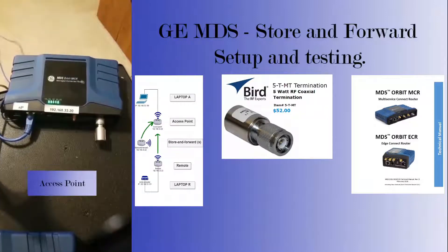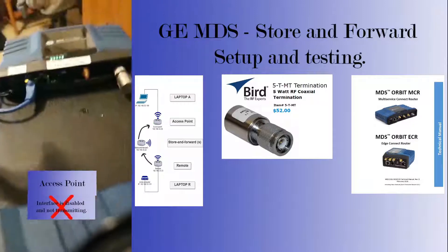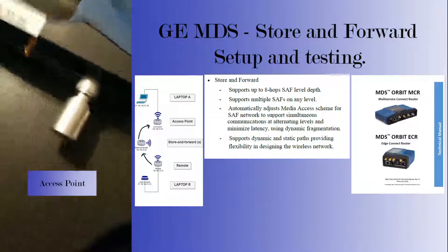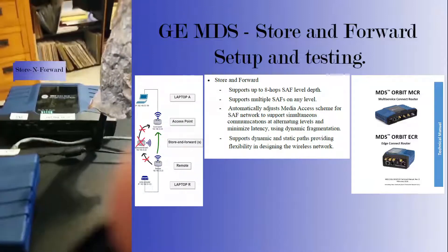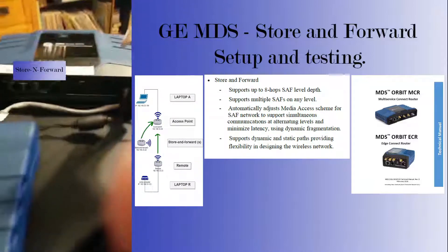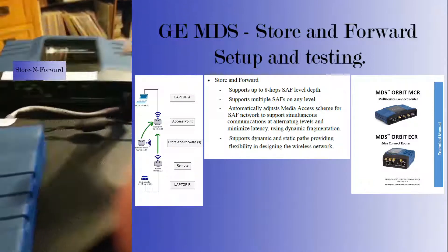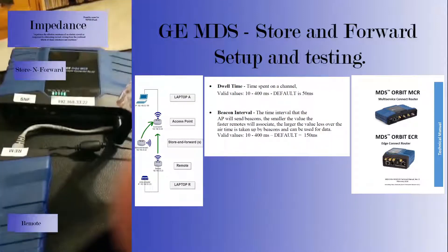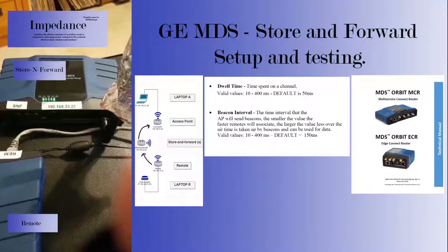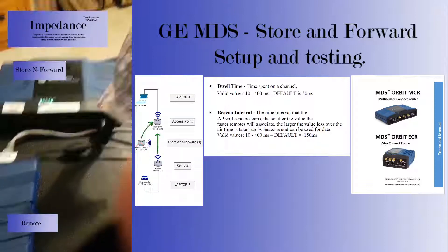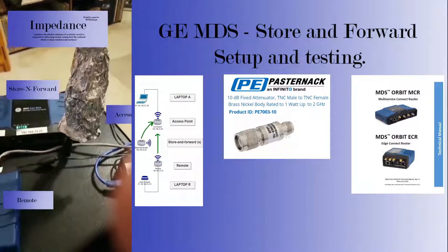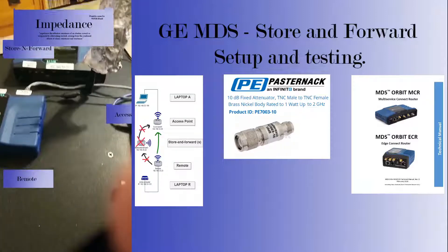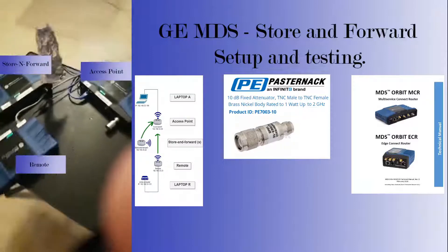I've got my access point. This particular unit also supports Wi-Fi, but we're not using it. I've got a 5 watt dummy load. I've got the store-and-forward, and it's a 900 megahertz only unit. This unit has tinfoil over its antenna — it's been reduced to 22 dBm power from 30, and the tinfoil is just adding some interference to help dial back that power for the other two units.